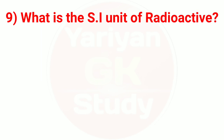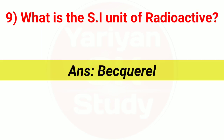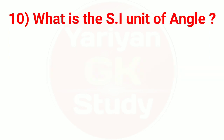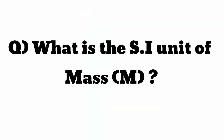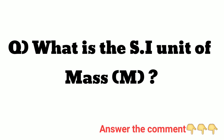Question number nine: What is the SI unit of radioactivity? Answer: Becquerel. Question number ten: What is the SI unit of angle? Answer: Radian.